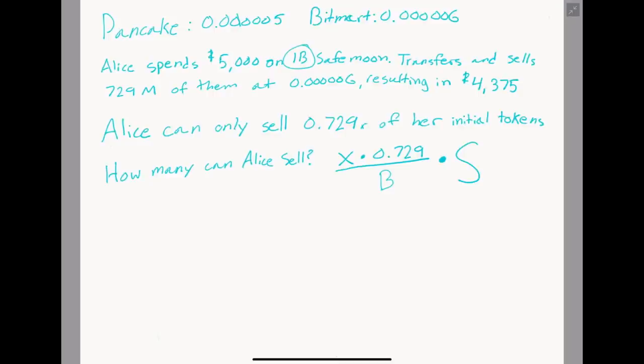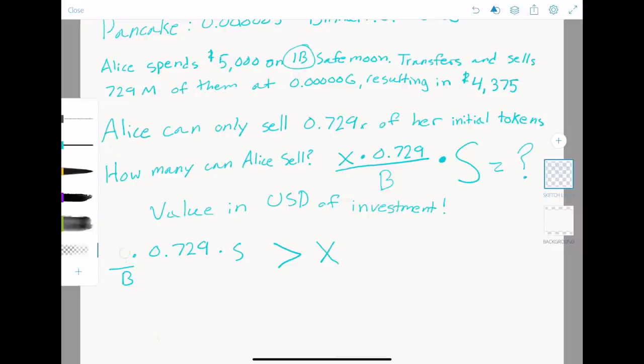Okay, that's the end. What is the answer to this equation? This is the value in USD of your investment after all fees are considered. So what does this answer need to be? It needs to be greater than your initial investment, or else you're doing all this just to lose money. Okay, we have a fairly ugly equation. Let's rewrite it to make it look more readable. So if we move things around, we can see that 0.729X times the sale price divided by the buy price must be greater than X. This is kind of better, but there is still an X on both sides of the equation, and there's no addition or subtraction to worry about, so let's divide both sides of this equation by X.